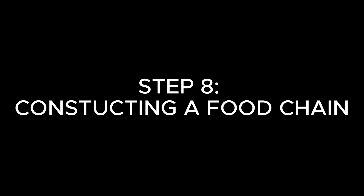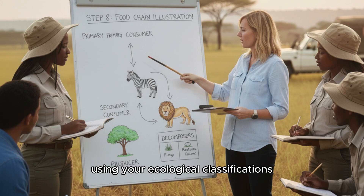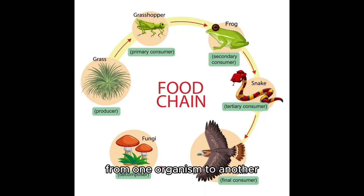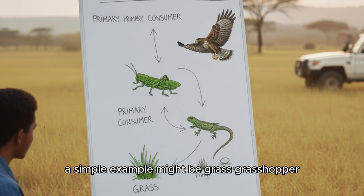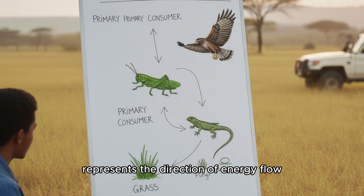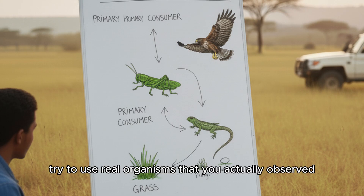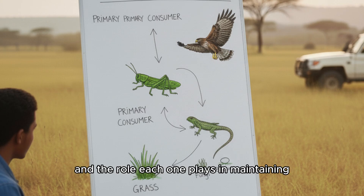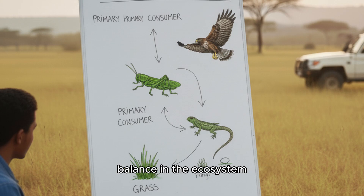Step 8: Drawing a Food Chain. Using your ecological classifications, draw a food chain that represents how energy passes from one organism to another. A simple example might be: grass → grasshopper → lizard → hawk. Each arrow in the chain represents the direction of energy flow. Try to use real organisms that you actually observed during your audit. The food chain helps you visualize the interdependence among organisms and the role each one plays in maintaining balance in the ecosystem.